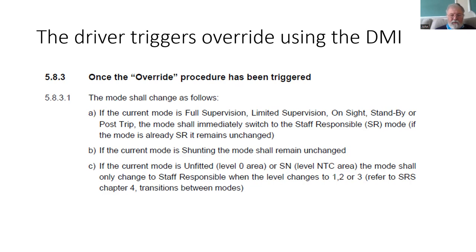If you are already in staff responsible, you remain in staff responsible. Similarly, if you're already in shunting, then you'll remain in shunt mode. That's logical because override doesn't apply to go past an end of authority in shunting — there is no end of authority in shunting — but it could be used to go past one of those Balise groups.